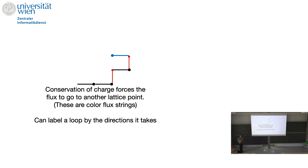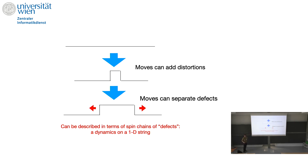Once you have a path, and then once you add the plaquette operator, the plaquette can make a move on the string — add some distortion. Then you can add more plaquettes, and the plaquettes can move these defects. You can think of all of these as spin chains of defects — it's kind of like the dynamics of a 1D string. The idea is that when you do perturbation theory starting from strong coupling, you generate some type of effective spin chain telling you how to make moves in this collection of paths from A to B.